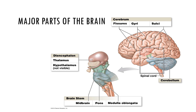The brain possesses four fluid-filled chambers called ventricles, which contain CSF or cerebral spinal fluid. The major regions of the brain are the cerebrum, the cerebellum, the diencephalon, the brain stem, and the midbrain, and we will take a look at each of these structures in the next few slides.